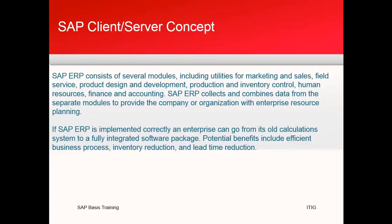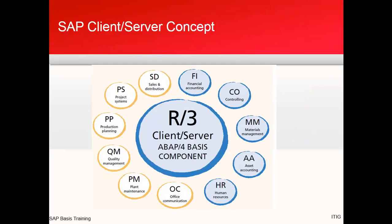SAP ERP consists of several modules including utilities for marketing and sales, field service, product design and development, production and inventory control, human resources, and financial and accounting. SAP ERP collects and combines data from separate modules to provide the company or organization with enterprise resource planning. If SAP is implemented correctly, an enterprise can go from its old calculation system to a fully integrated software package. Potential benefits include efficient business processes, inventory reduction and lead time reduction.